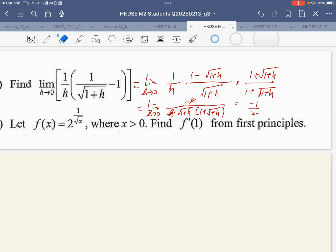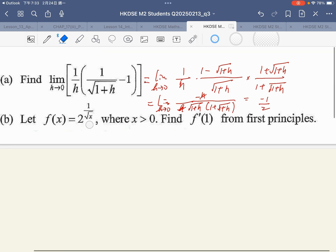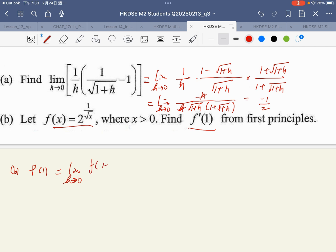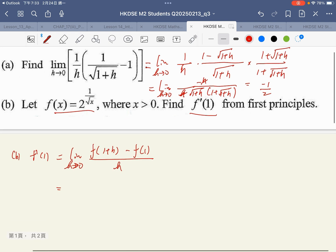For the second part, differentiate this function at the point x equals 1 using first principles. The limit as h tends to 0 of f(1+h) minus f(1) over h. So h tends to 0, f of 1 plus h is 2 to the power 1 over square root of 1 plus h, minus f(1) which is 2, all over h.